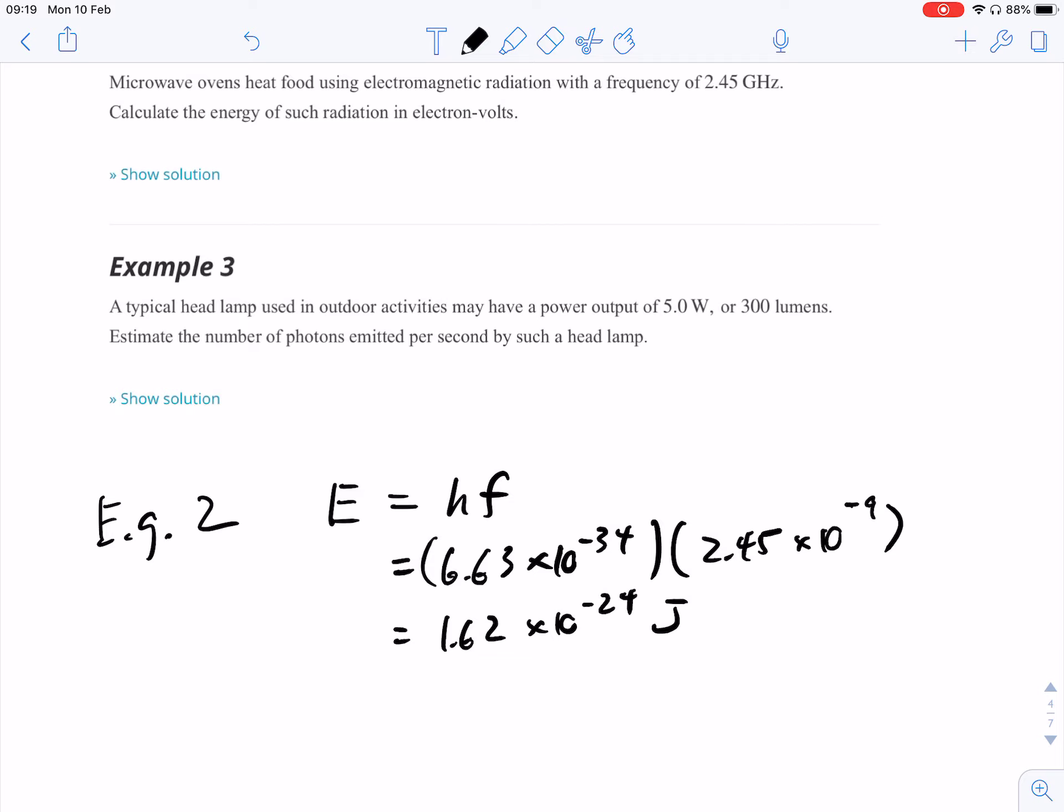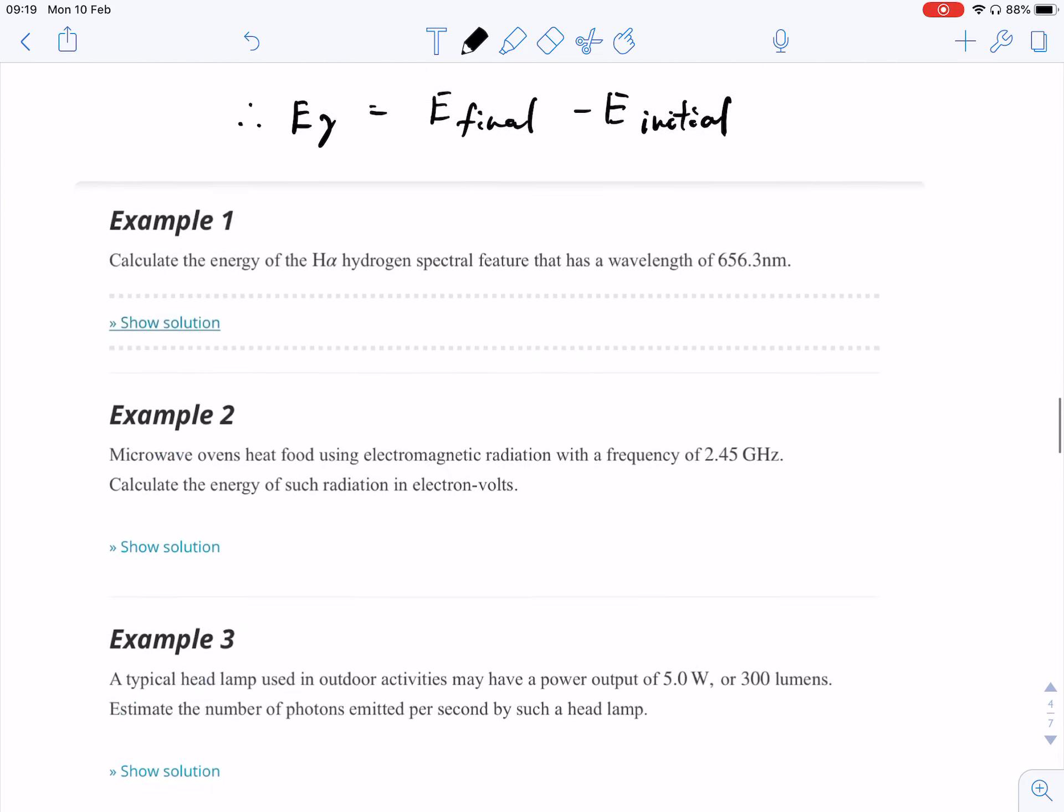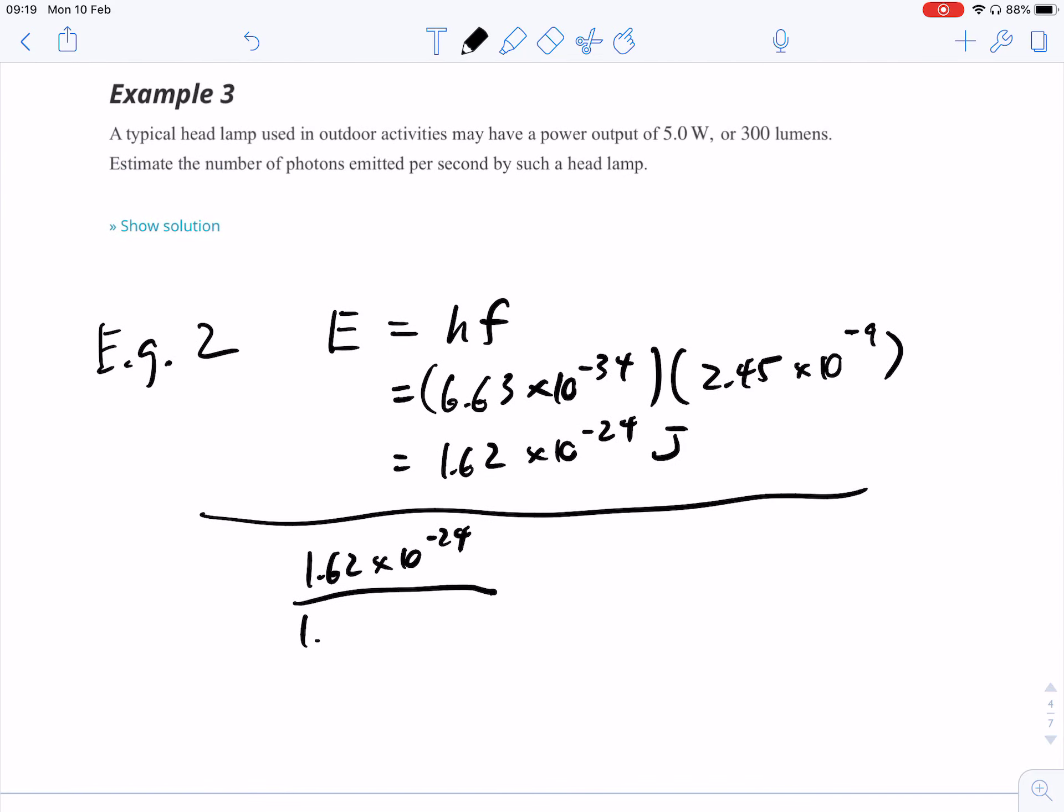And so we're going to get 1.62 times 10 to the power of negative 24 joules. And again, do our conversion. So that was step number one. Step number two. 1.62 negative 24, 1.6 times 10 to the power of negative 19. And this is going to give us 1.01 times 10 to the power of negative 5 electron volts.